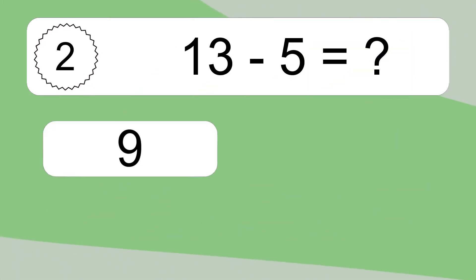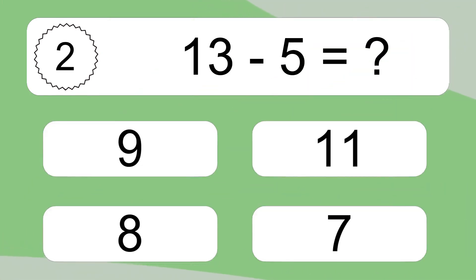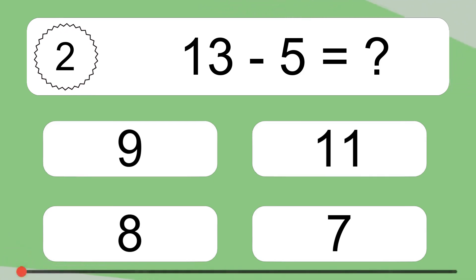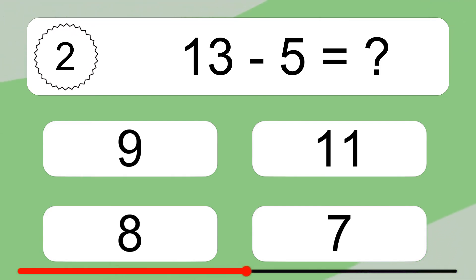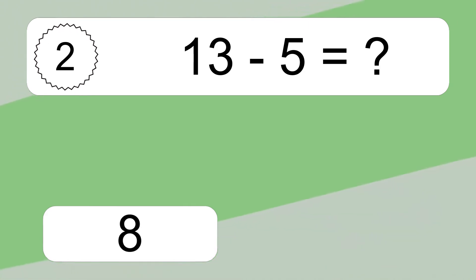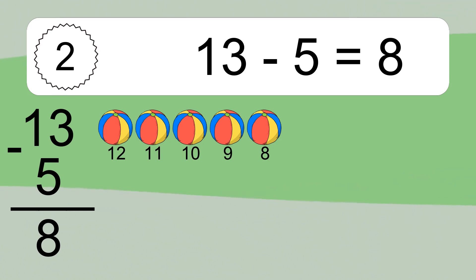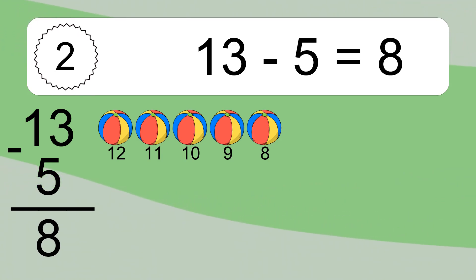13 minus 5 equals what? 13 minus 5 equals 8. Let's count it: 12, 11, 10, 9, 8.